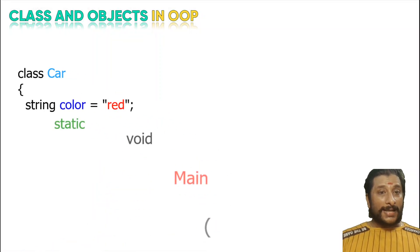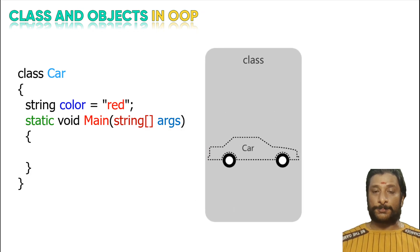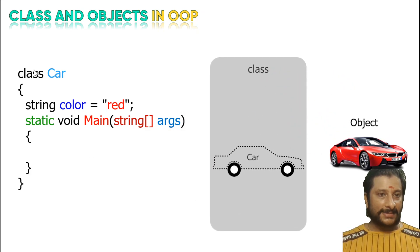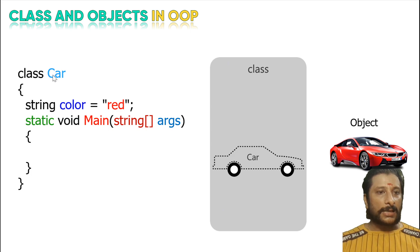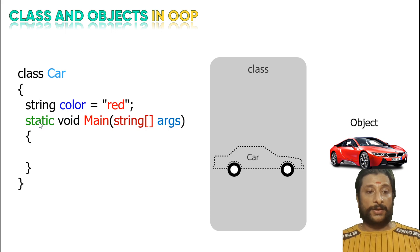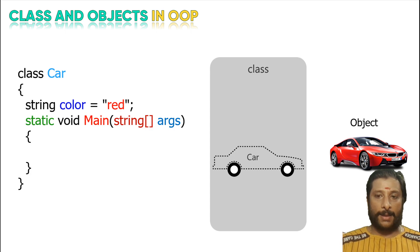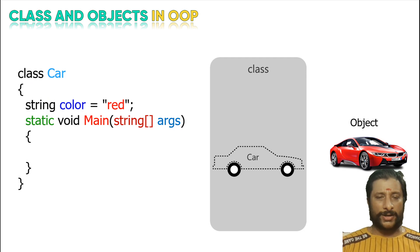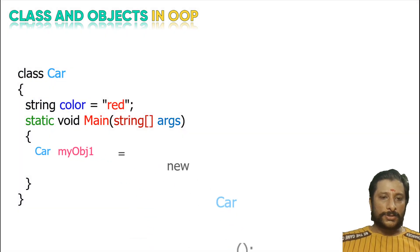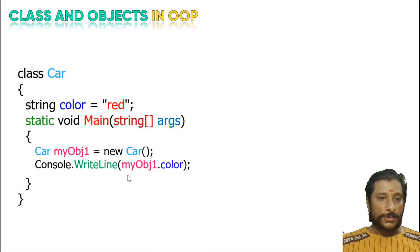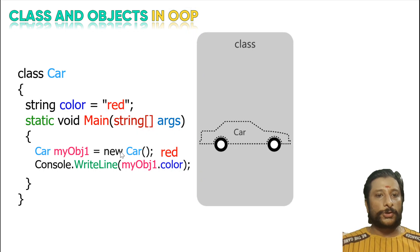Programming is very simple. You can see this is how you write a class program. You have a class — class Car — with a bracket and a property: String color equals red. Then you have the static void main method, which is the entry point of the program for Java, C#, or any language. To create an object, you write: Car myobj1 equals new Car. So it is a red color car — that's it.